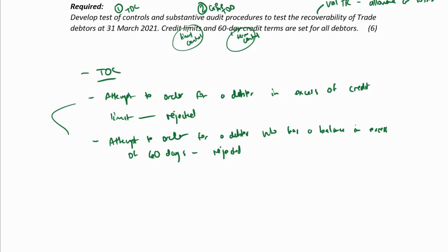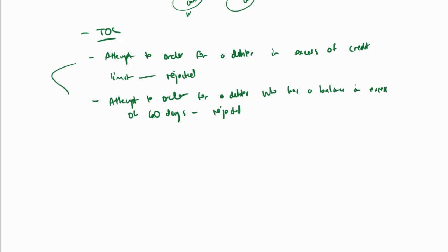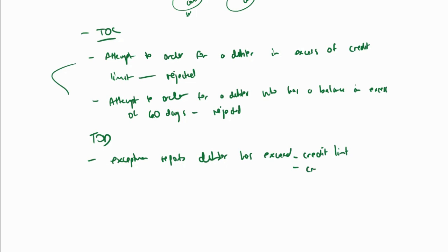I can only test the controls that they have provided. That's done. Now I need procedures to test for the recoverability of the allowance, and I want to use CATS as far as possible. For tests of detail, I can get exception reports for where a debtor has exceeded his credit limit and where he has exceeded his credit terms.